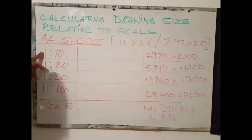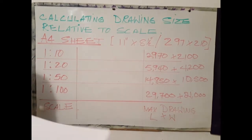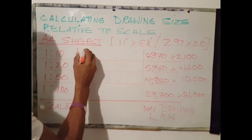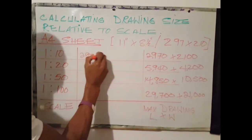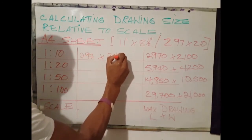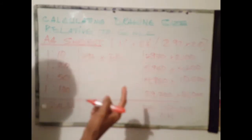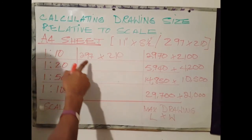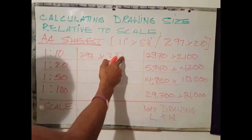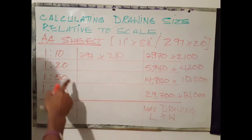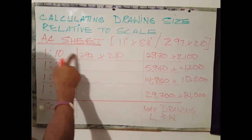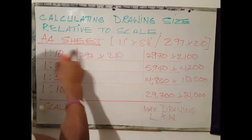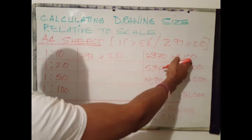If we intend to use a 1 to 10 scale, we would want to determine the maximum size drawing that can fit onto this 1 to 10 scale. We would multiply these dimensions by 10. When we multiply 297 by 10, we get 2970. 210 by 10, we get 2100.